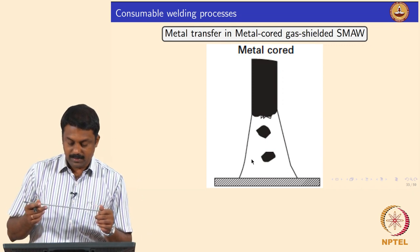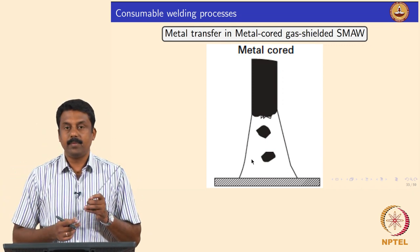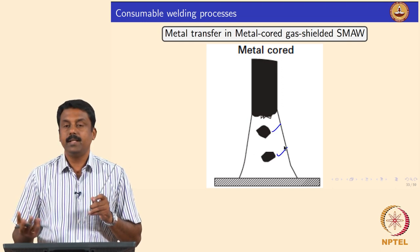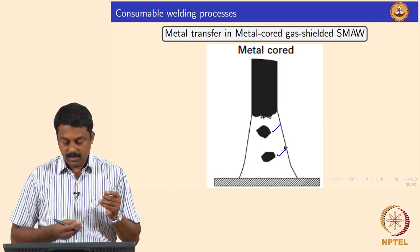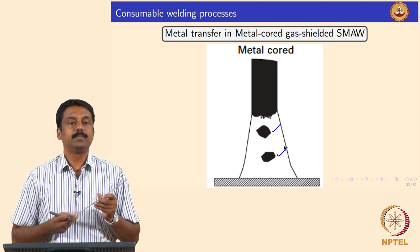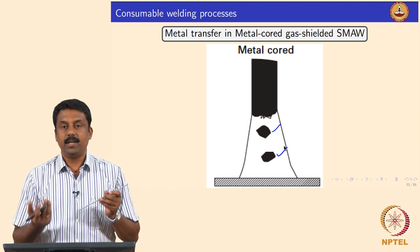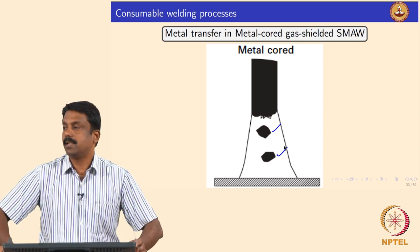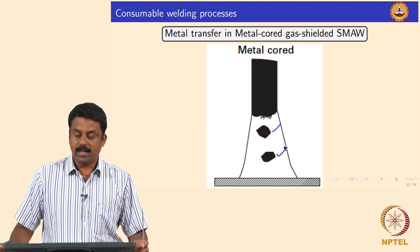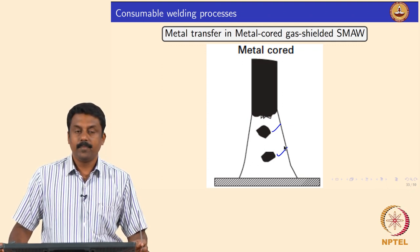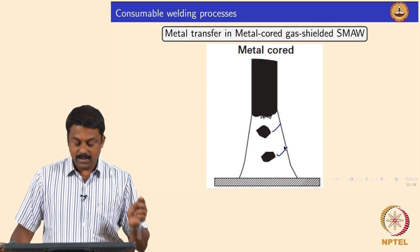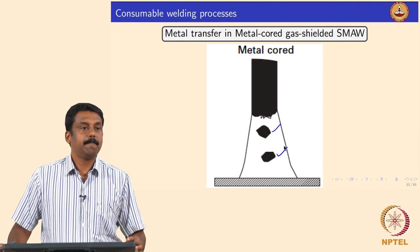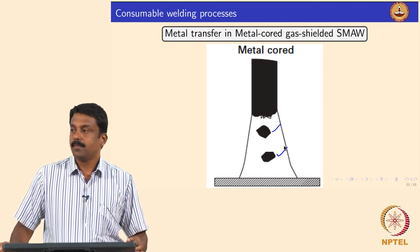Metal transfer in SMAW is in most cases globular. The droplet diameter is much smaller because surface tension decreases with the addition of fluxes — especially in rutile or titanium oxide-containing electrodes — which influences surface tension such that the droplet can be detached with a much smaller diameter.